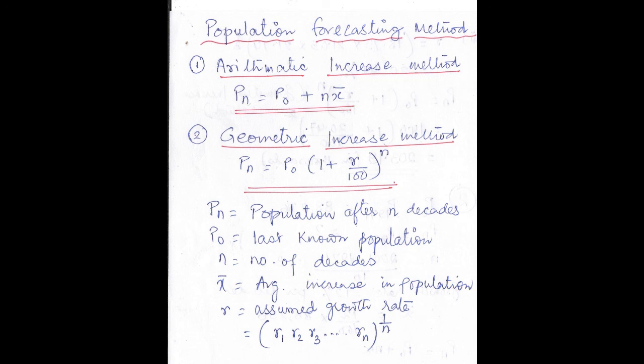First I will discuss the arithmetic increase method. The formula is: Pn = P0 + N × X̄. The second formula is for the geometric increase method: Pn = P0 × (1 + R/100)^N.